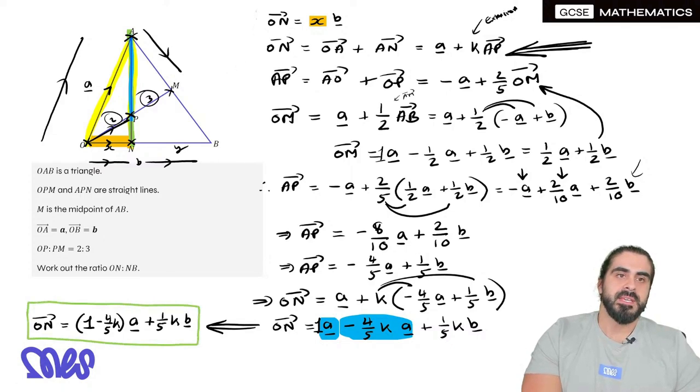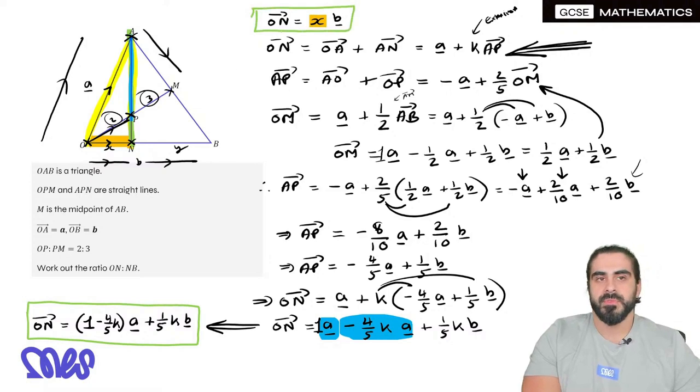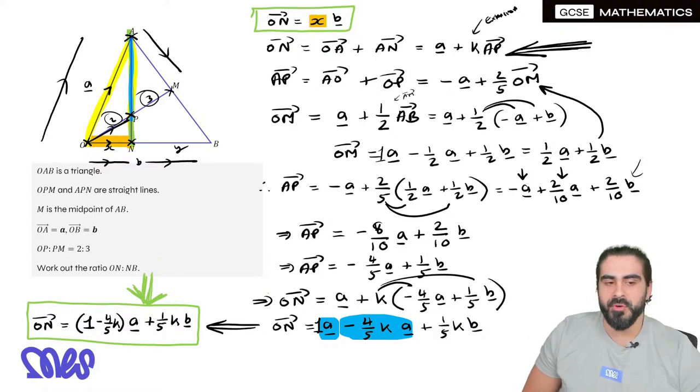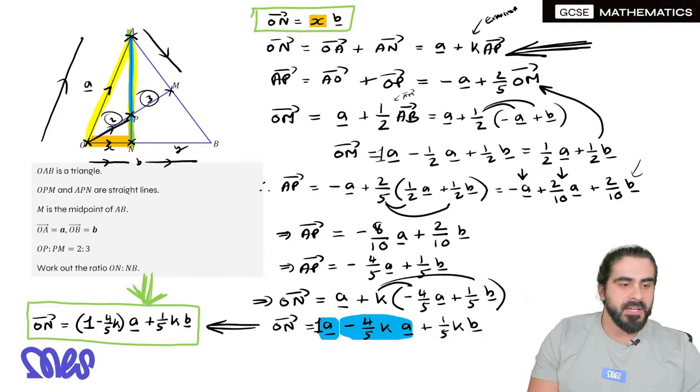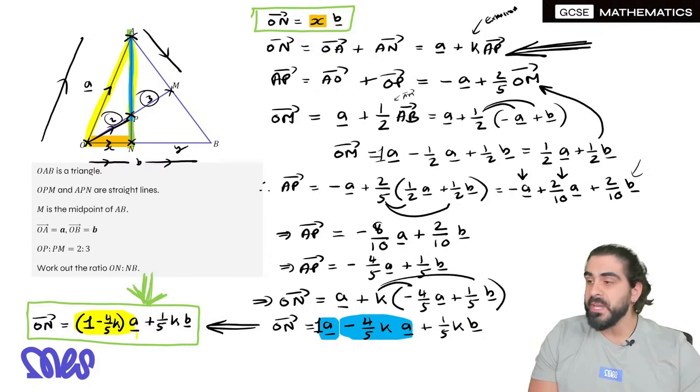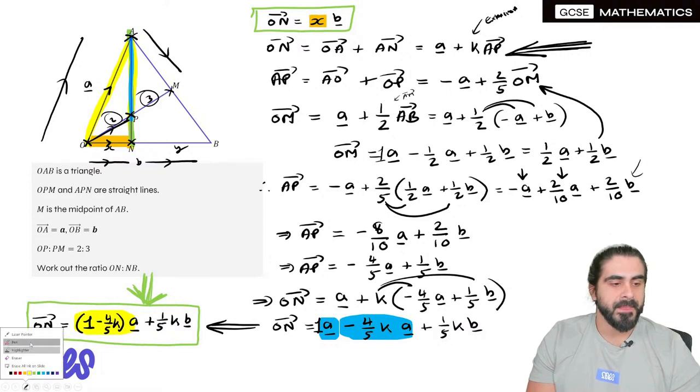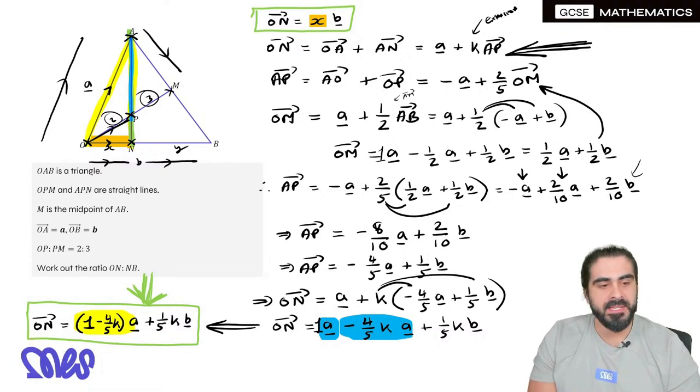But I said at the beginning that O to N should be in this form. So look at this. What is in that that should not be there because of the form of ON? O N is horizontal. O N is horizontal. Meaning, why is there an A term? Why is this here? Well, we need to fix it so that it does not exist. Meaning, the coefficient of A has to be zero. Meaning, one minus four fifths K has to equal zero.